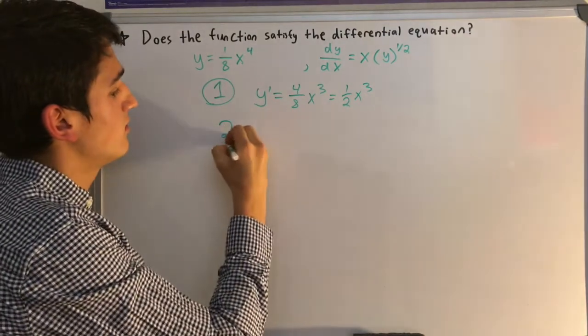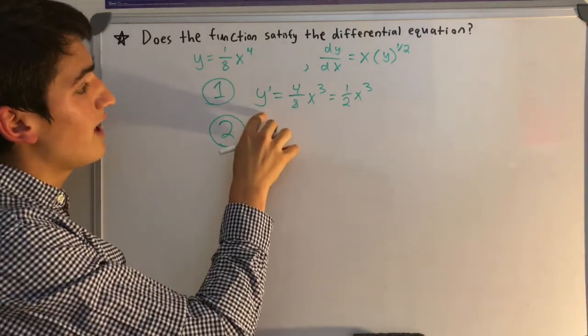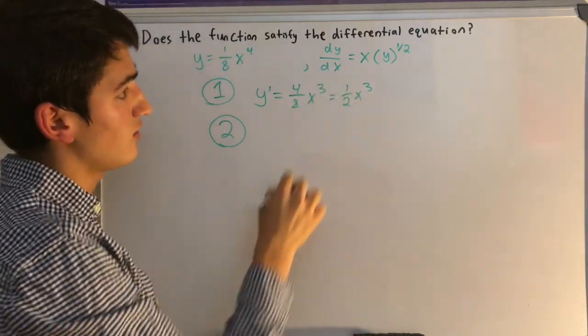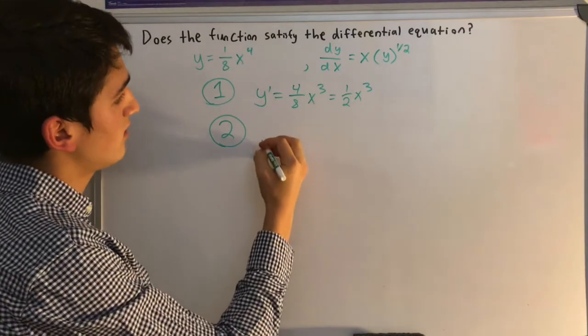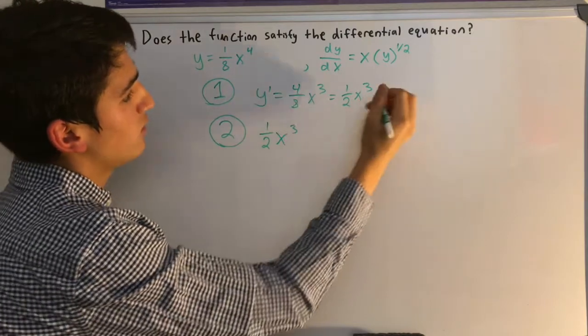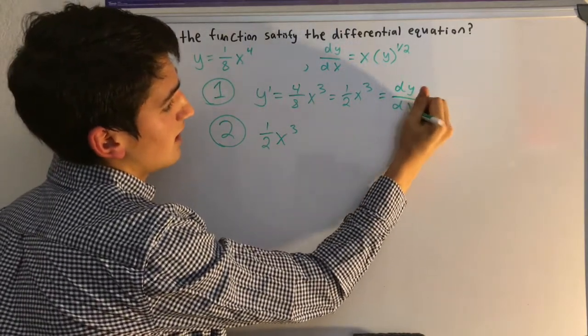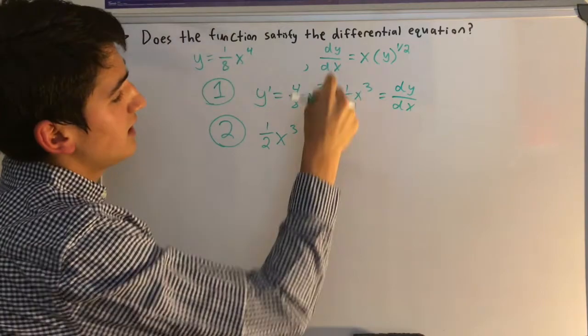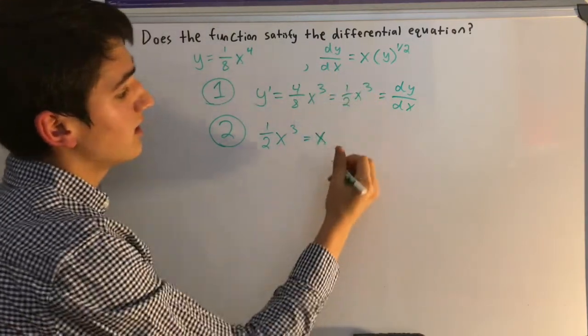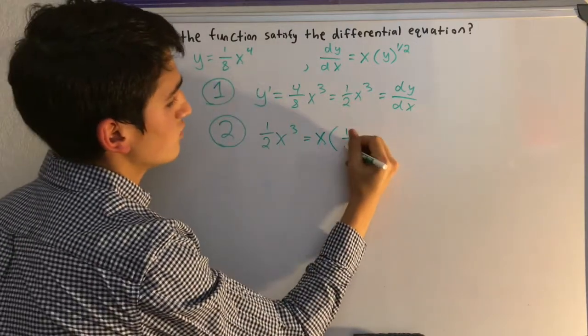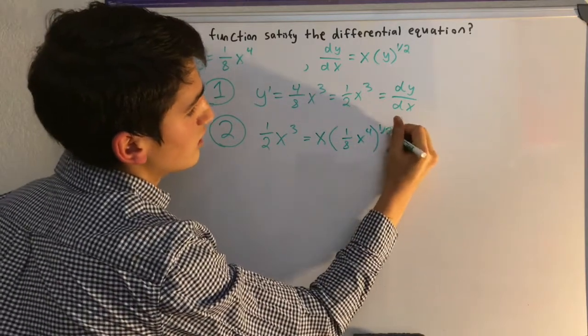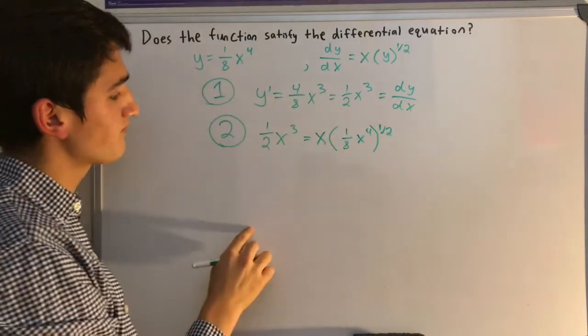So now step 2, we just plug this y prime equation and this y equals equation into the differential equation. So we do 1 half x cubed, because that's our y prime, which is essentially the same as dy/dx. So we're just plugging this into here equals x, and then y, which we have y up here. So that's 1 eighth x to the fourth, all to the 1 half, because this is our y term.